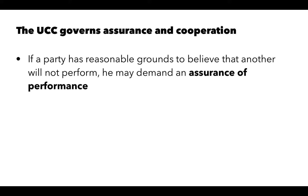The UCC also governs concepts called assurance and cooperation. Assurance means that if a party has reasonable grounds to believe that the other party will not perform, that party may demand an assurance of performance. For example, if a seller discovers the buyer is insolvent and unlikely to pay, the seller may demand a guarantee of performance before delivering the goods. Similarly, a buyer who believes the seller cannot deliver conforming goods may demand an assurance of performance. If that assurance is not provided, the demanding party may be relieved of its obligation to perform under the contract.